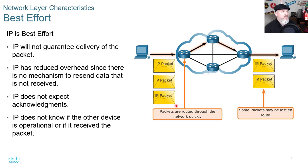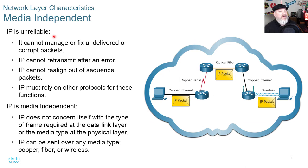The other end may or may not see the packets, and some packets can be lost in route — and that's acceptable. IP is unreliable: it cannot manage or fix undelivered or corrupted packets, cannot retransmit after an error, cannot realign out-of-sequence packets, and must rely on other protocols for those functions.